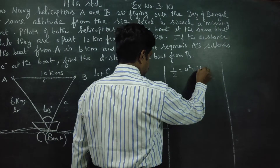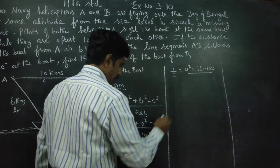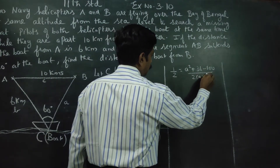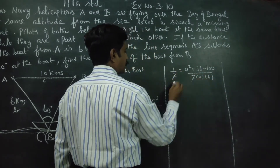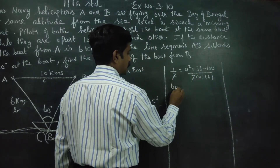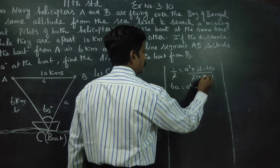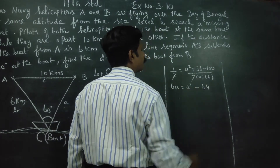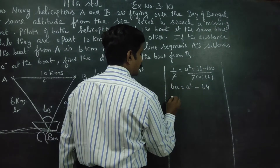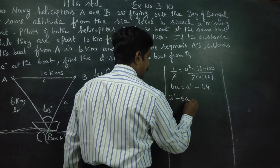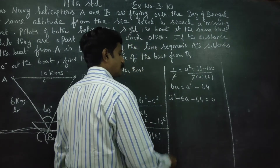cos 60 is 1 over 2, so: one half equals a squared plus 6 squared minus 100, divided by 2 times a times 6. That gives us 6a equals a squared plus 36 minus 100, which simplifies to a squared minus 6a minus 64 equals 0.